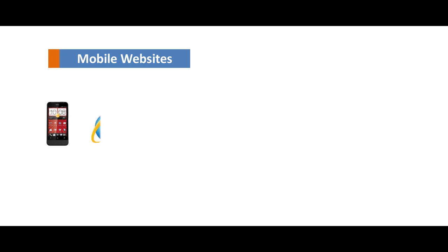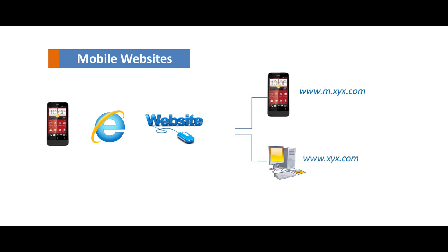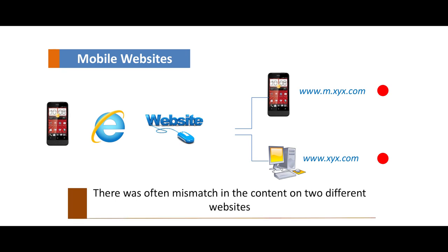A few years back, when the usage of mobile phones for accessing the internet increased, a need was felt to design websites for mobile phones. As a result, two versions of the same website were developed — one each for desktop and mobile phone. Mobile phone versions were referred to as mobile websites. Two different domain names were used, one for each device. The content on both websites was managed differently, and there was often a mismatch in the content of the two different websites.